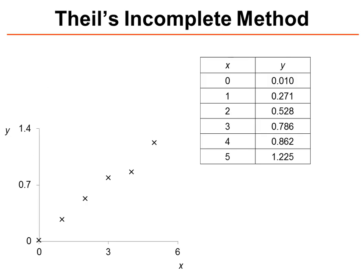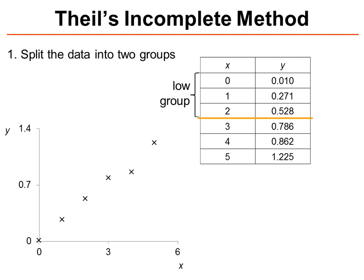So if we take this example, we've got some xy data which has also been plotted. The first step that we need to take is that we need to split the data into two groups. We need a low group and a high group, and we've split these down the middle, so we've got x values from 0 to 5 in ascending order, split into two equally sized groups.